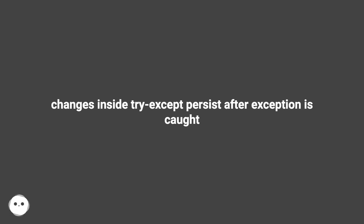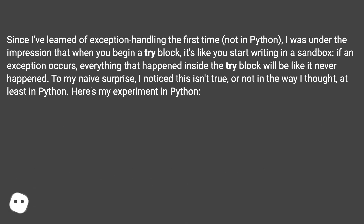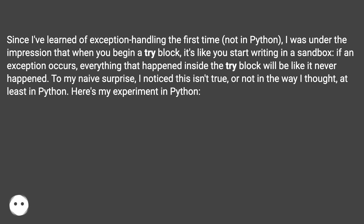Changes inside try-except persist after an exception is caught. Since I first learned about exception handling — not in Python — I was under the impression that when you begin a try block, it's like writing in a sandbox. If an exception occurs, everything that happened inside the try block would be like it never happened. To my naive surprise, I noticed this isn't true, or at least not in the way I thought, at least in Python.